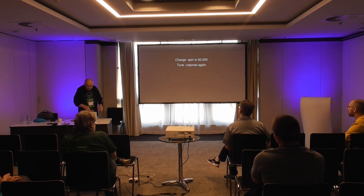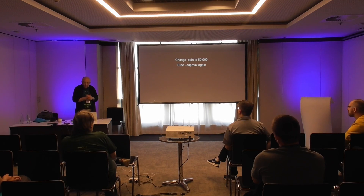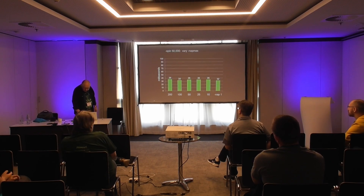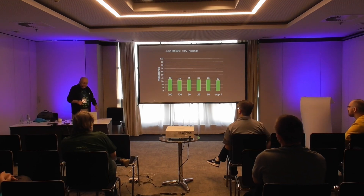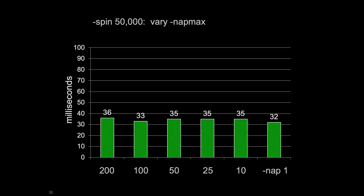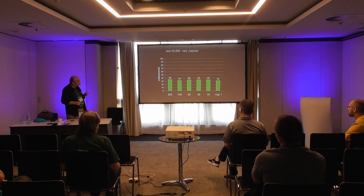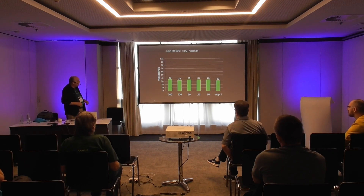Now let's change -spin to 50,000. What's going to happen then? As you vary -napmax with spin at 50,000, you can see that it doesn't have much effect — it has a slight effect, but it's kind of in the margin of error almost.